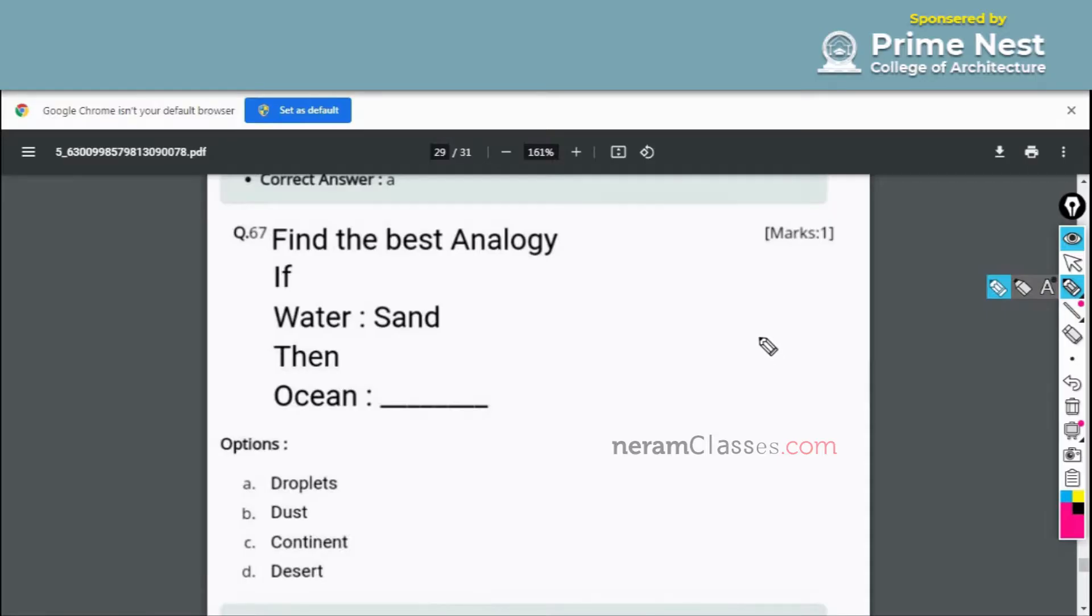Hi all, this is NATA 2021 second item question paper. Now we will see question number 67. Find the best analogy: if water is to sand, then ocean is to what? This is a comparison kind of question where water is compared with sand. If we compare it the same way with the ocean, what will be the answer?